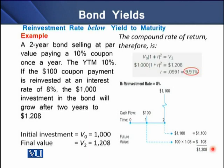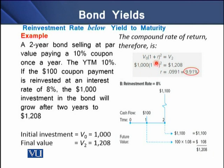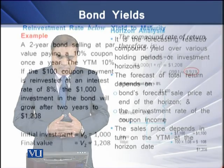But what if the reinvestment rate is below the yield to maturity? With a two-year bond selling at par, paying a 10% coupon, and a YTM of 10%, if the $100 coupon is reinvested at 8%, the $1,000 investment grows to $1,208 after two years. The value at end of year one is $1,100, grown at 8% gives $1,208. Solving for r gives 9.91%, which is less than the YTM of 10%.